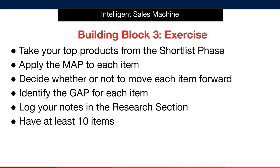Our exercise for building block number three is to take the top products from the shortlist phase, apply the map to each one of those items, then decide whether or not to move each item forward. We then want to identify the gap for each item and log any notes inside the research section of the Google Sheet.